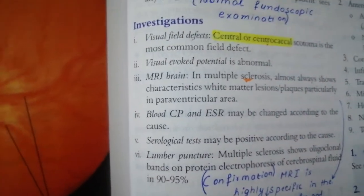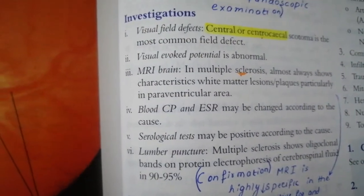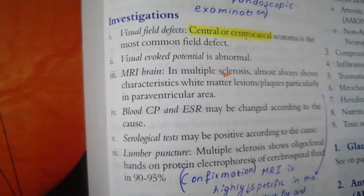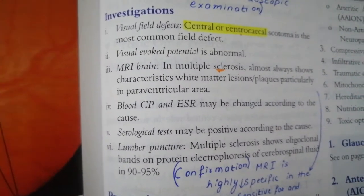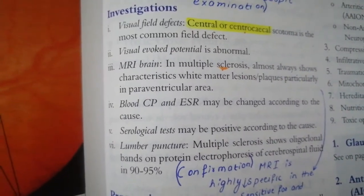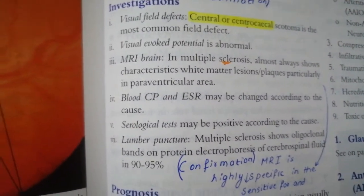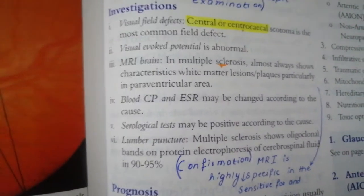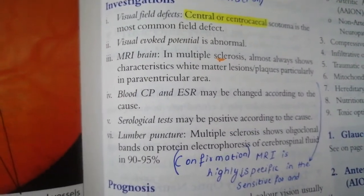For investigations, automated perimetry is very important and will be positive for a visual field defect. Because the condition is highly associated with multiple sclerosis, MRI of the brain should be done. In multiple sclerosis, there are characteristic lesions in white matter, most commonly seen in the periventricular area. If other causes are suspected, serology including ESR and syphilis antibodies can be checked.